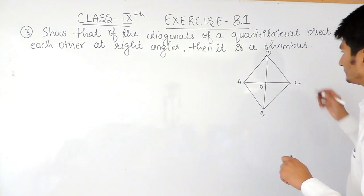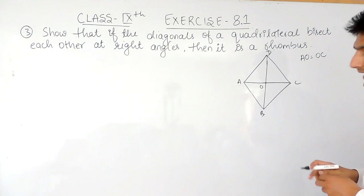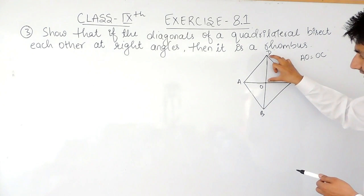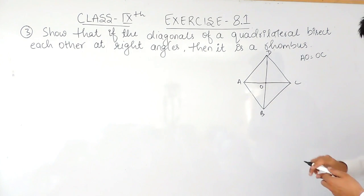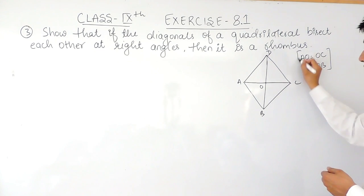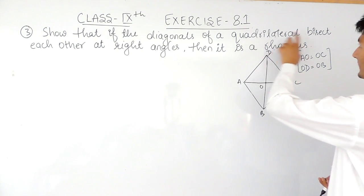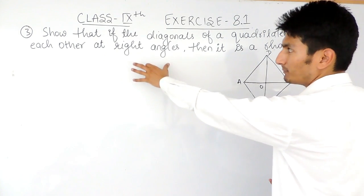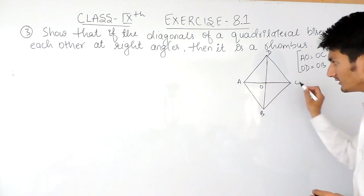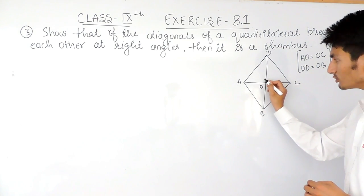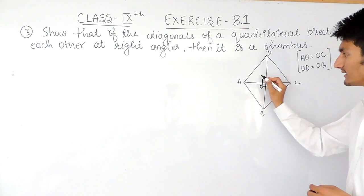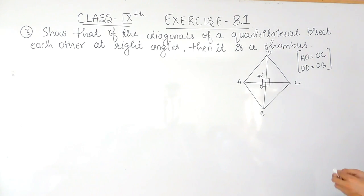So AO equals OC, and similarly OD equals OB — this point also divides the other diagonal into two equal parts. This is the first part given to us. The second part is that they bisect each other at right angles, meaning the angle formed between the two diagonals is 90 degrees, so all four angles at O are 90 degrees.